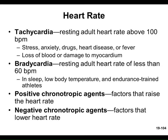Tachycardia is anything over 100 beats per minute — the R-to-R interval would be less than 0.6 seconds, since the normal range is 0.6 to 1.2 seconds. Bradycardia is fewer than 50 beats per minute — the R-to-R interval exceeds 1.2 seconds. The heart is beating more often with less time in between for tachycardia, and less frequently for bradycardia.